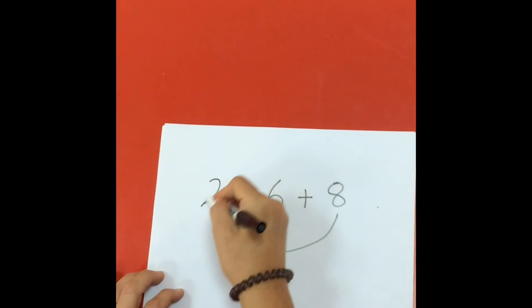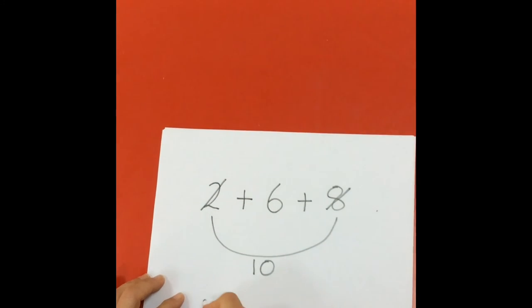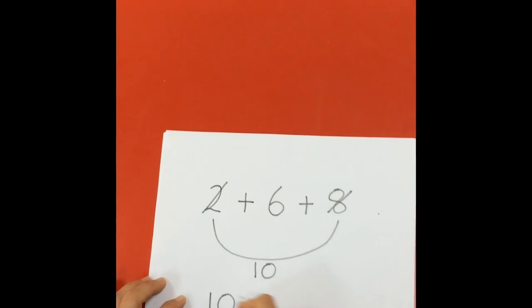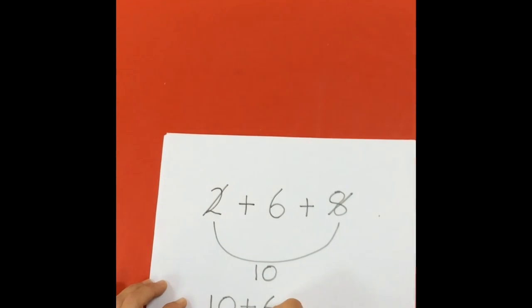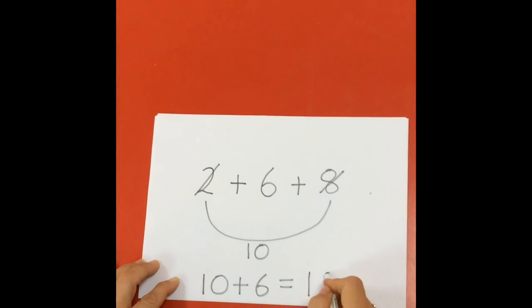Which means they've used these two numbers, so all they have to add on is the ten plus the six, which totals 16.